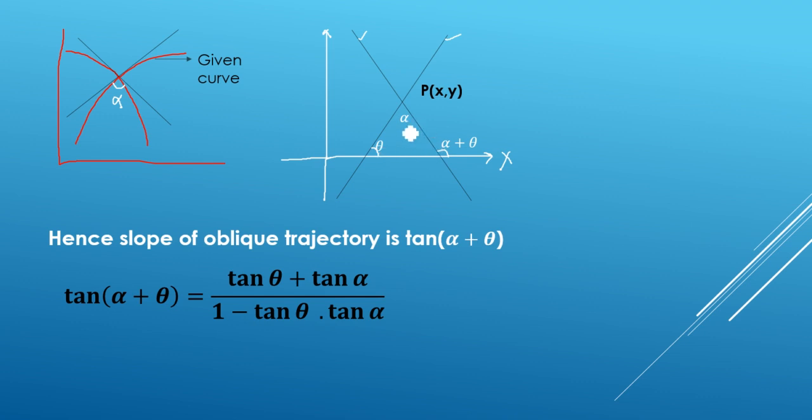Which says that the exterior angle is the sum of two interior opposite angles. So in this case we have two angles, which is alpha and theta. So this means this angle, which is oblique trajectory, that will be theta plus alpha.